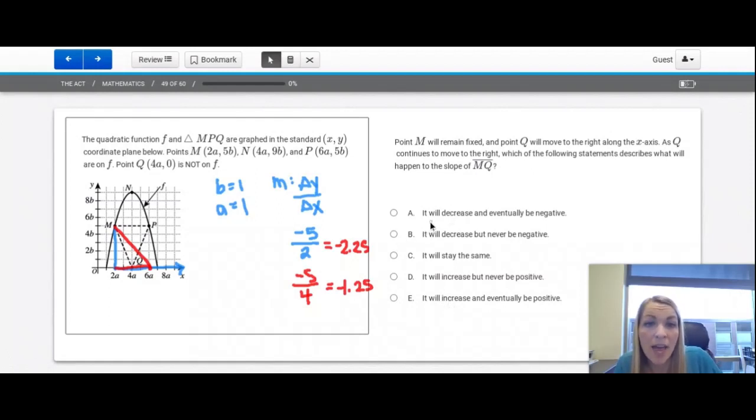So let's go look and see what happens here. A says it will decrease and eventually be negative. Well, these were increasing, so it's not A. B says it will decrease but never be negative. Well, again, it's not decreasing. It's increasing. It definitely didn't stay the same. D says it will increase. Okay, that's true, but never be positive. And that's appearing to be true for D because no matter what we do, this line is always going down from left to right. So in this case, it says it'll eventually be positive. Well, that's not going to happen. So D it is.